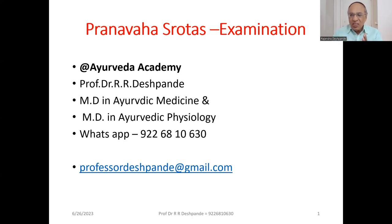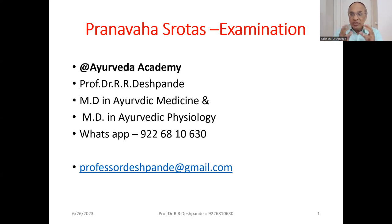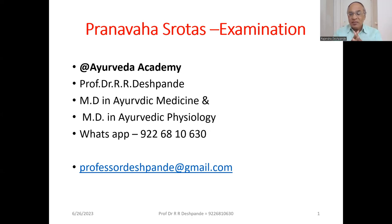The 13 Srotasas are: Prana Vaha Srotas, Anna Vaha Srotas, Udaka Vaha Srotas — Prana, Anna and Udaka. Then the seven Dhatu Srotasas: Rasa Vaha, Rakta Vaha, Mamsa Vaha, Medo Vaha, up to Shukra Vaha Srotas. And then the three Mala Srotasas: Mutra Vaha Srotas, Purisha Vaha Srotas, and Sveda Vaha Srotas. These total 13.